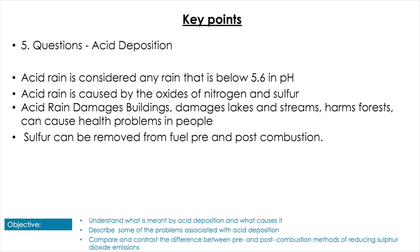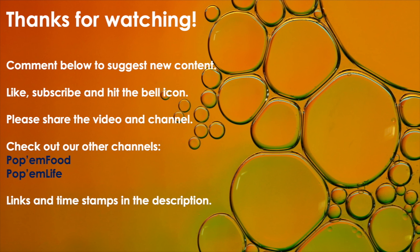Summarizing: remember we're not including carbon dioxide in acid rain, and pHs between 5.6 and 7 are not considered acid rain. Make sure you do some questions to check you really understand what's going on. Thanks for watching — comment below, like, subscribe, hit the bell icon, share the channel, and check out the videos on our other channels. As always, practice makes slightly better.